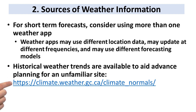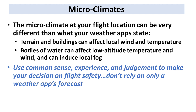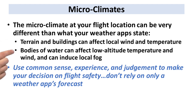There's a link that will help you with that. You've checked your three apps, decided everything's great, you drive to your location — and it's completely different than anything you expected. This can be the effect of microclimate. The microclimate at your flight location can be very different than what your weather apps state. Terrain and buildings can affect local weather and temperature. Bodies of water can affect low-altitude temperature and wind, and can induce local fog. The key takeaway is: when you get to your flight location, you must use common sense, experience, and your own judgment to make your decision on flight safety.